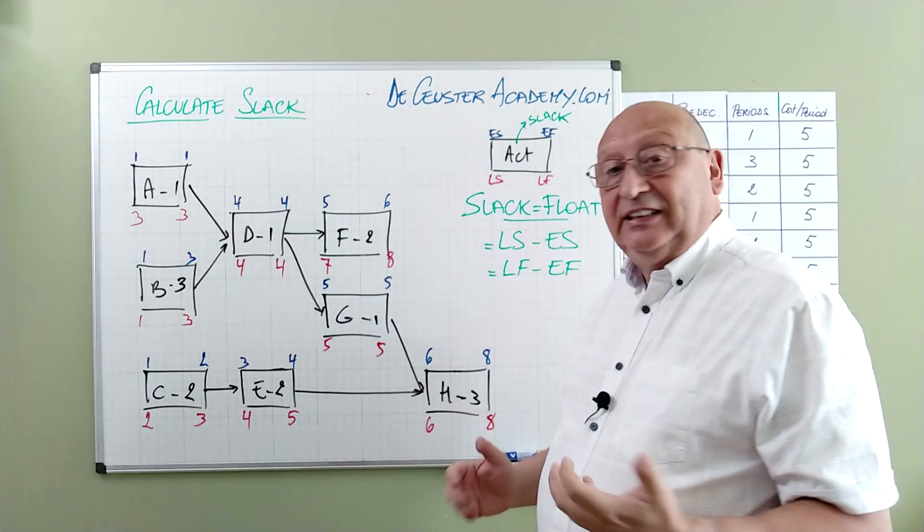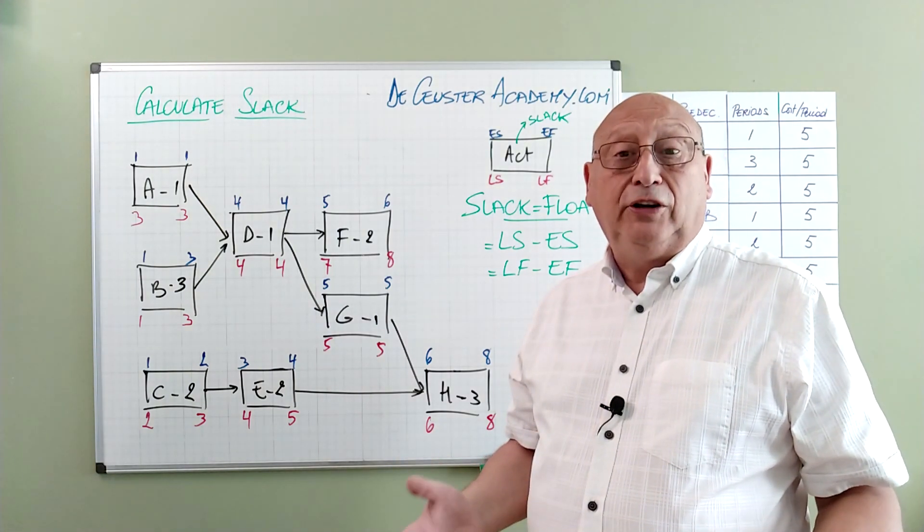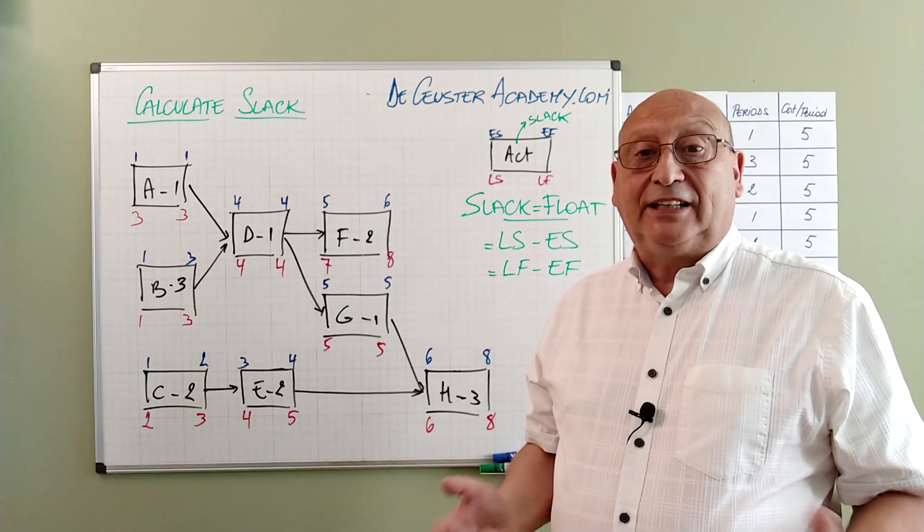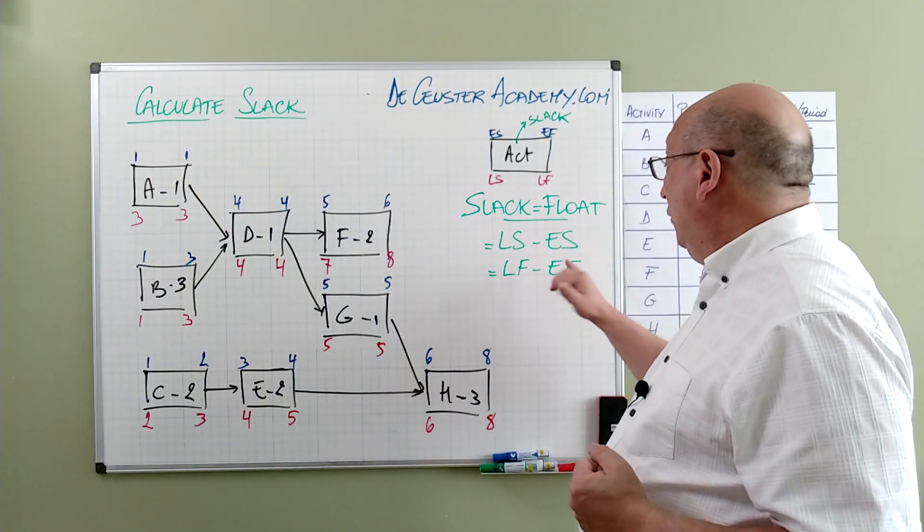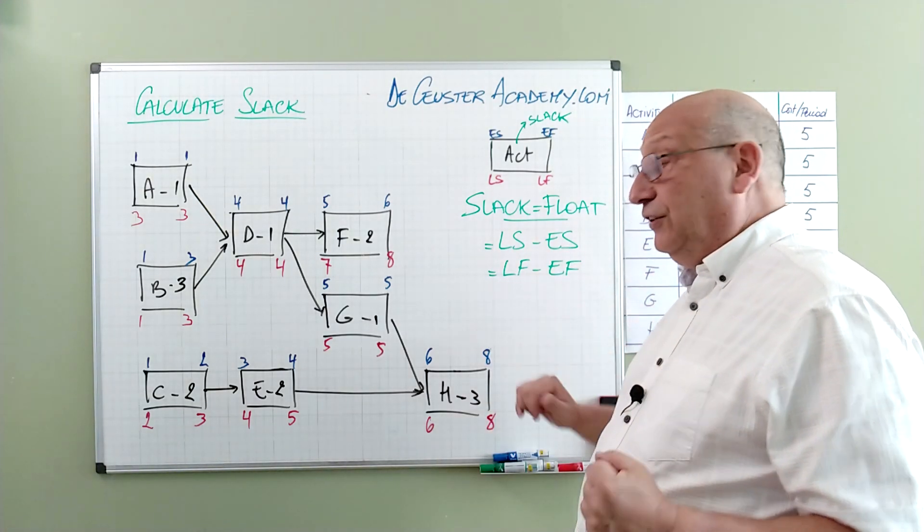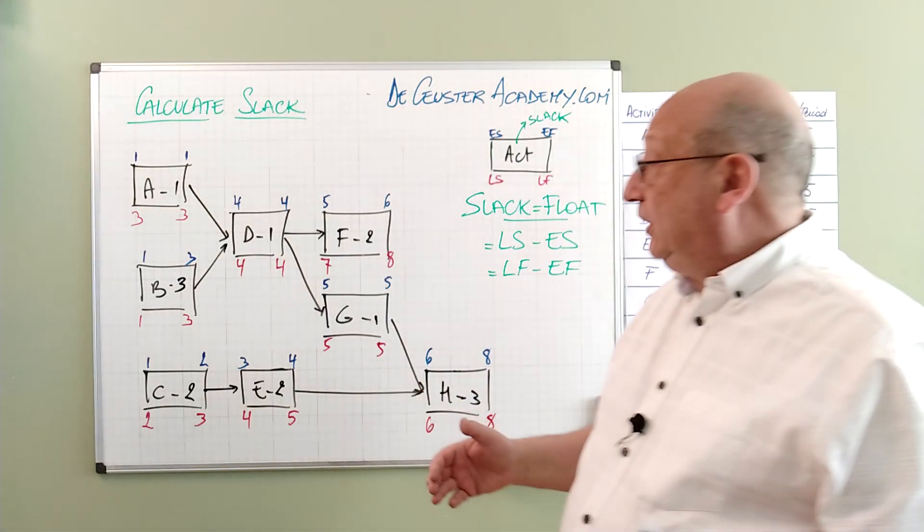We have the precedence diagram. We calculated already early start and early finish times. The next thing to do is to calculate the slack of all the activities. And the slack or float is determined by the formula late start minus early start or late finish minus early finish. And we can do that very quickly for the project.